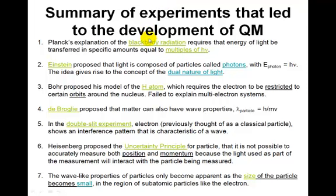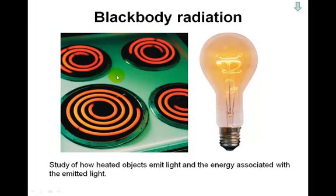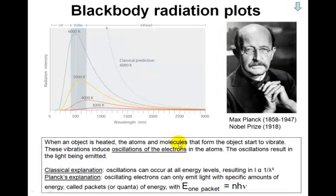The first experiment was the blackbody radiation experiment. When you heat an object, it tends to start to glow at a certain temperature and that glow corresponds to a particular wavelength or frequency. To explain this observation, Max Planck assumed that the light energy emitted by the hot object has to come in specific values or packets.